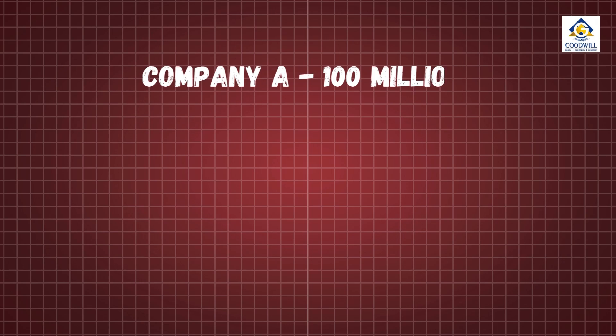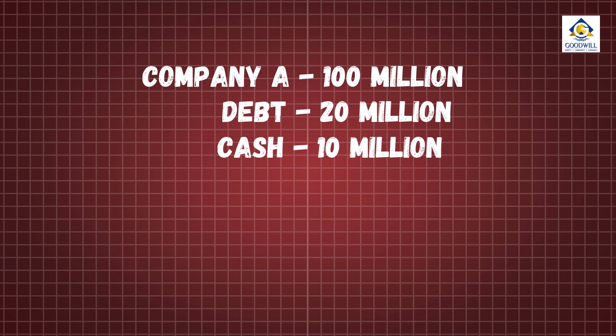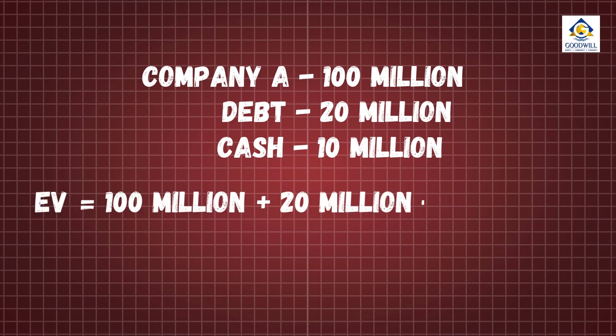Let's say company A has a market cap of $100 million, $20 million in debt, and $10 million in cash. Here's how we'd calculate its enterprise value: EV equals $100 million plus $20 million minus $10 million, which equals $110 million.